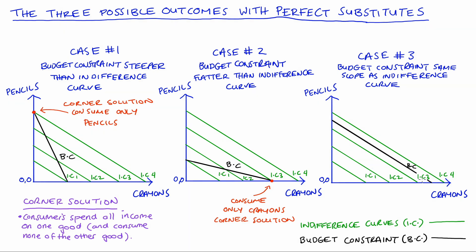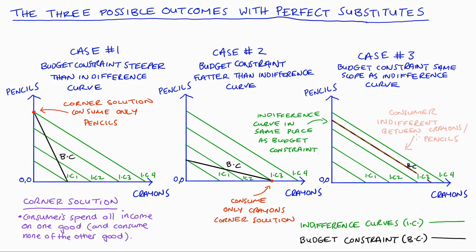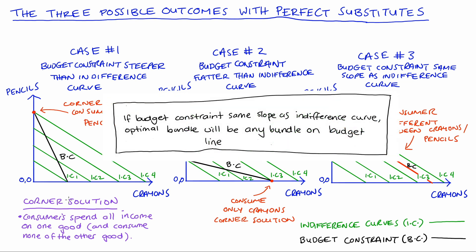The third case is when the indifference curves have exactly the same slope as the budget constraint. Because all bundles are ranked, there will be an indifference curve that occupies exactly the same line as the budget line — I'll put a dotted line here to indicate both lines are in the same place. In this case, the consumer is indifferent between consuming all pencils, all crayons, or any mixture in between. Any bundle along the budget line will be optimal.